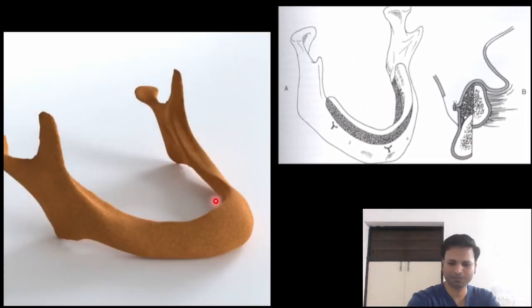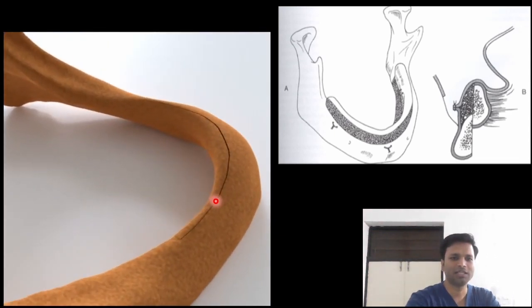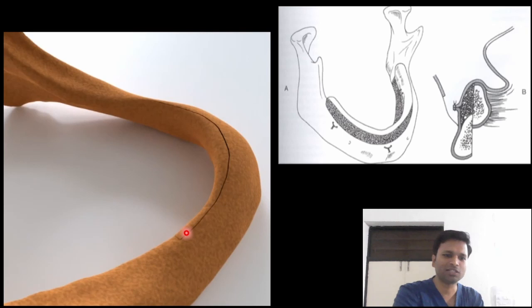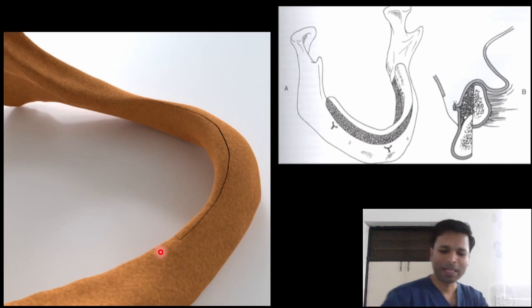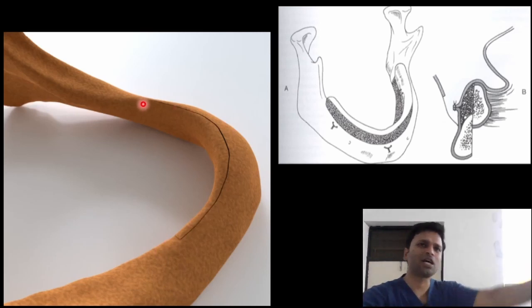So we have this mandible. Look at this. Can you see the incision? The osteotomy cut in the mandible. Now, ideally, this osteotomy cut should have been till the angle. You can see this is along the arch, vertical cut along the arch of the mandible.